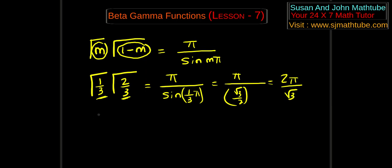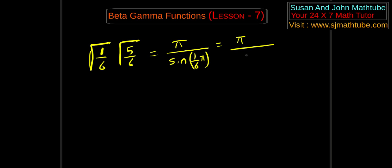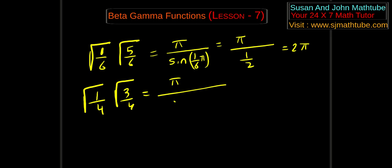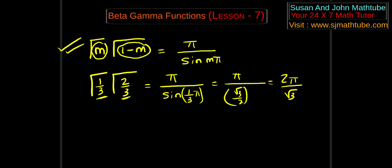Similarly, γ(1/6) · γ(5/6): put the smaller one first, sum equals 1, so the answer is π / sin(π/6) = π / (1/2) = 2π. And γ(1/4) · γ(3/4) gives π / sin(π/4) = π / (1/√2) = √2π. So you now have a clear explanation of the formula γ(m) · γ(1−m) = π / sin(mπ).